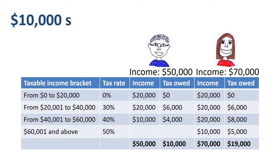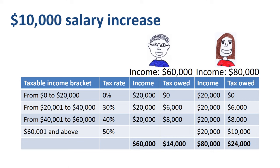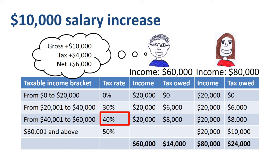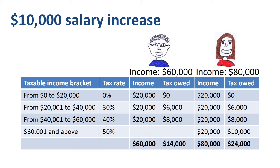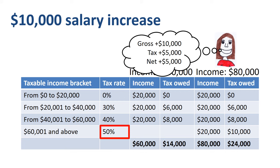What if both John and Jane get a $10,000 salary increase in their next promotion? It would take John's taxable income from $50,000 to $60,000, and Jane's taxable income from $70,000 to $80,000. For John, who has a marginal tax rate of 40%, a $10,000 increase in gross income leads to an extra $4,000 tax owed and an increase in net income of $6,000. For Jane, who has a marginal tax rate of 50%, a $10,000 increase in gross income leads to an extra $5,000 tax owed and an increase in net income of $5,000. On the same increase in gross income, John has a larger increase in net income due to the difference in marginal tax rate.